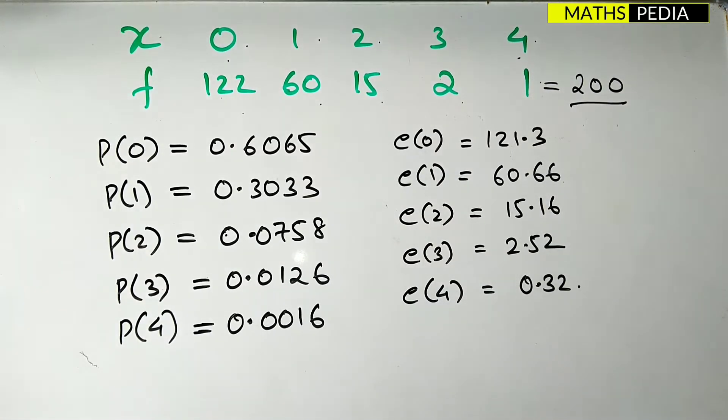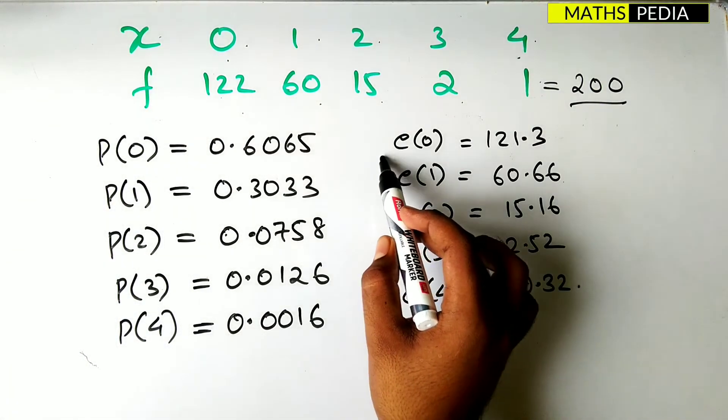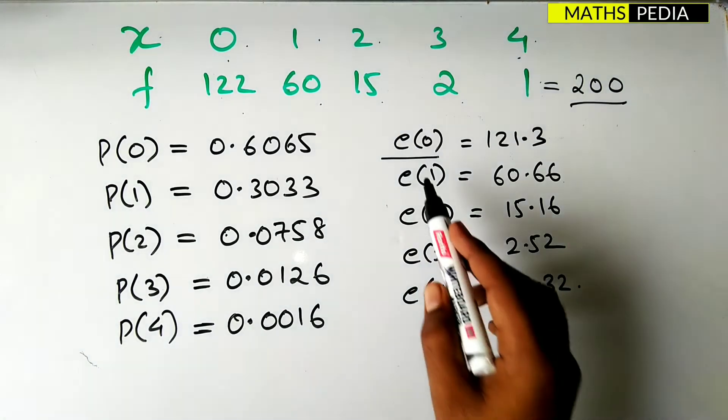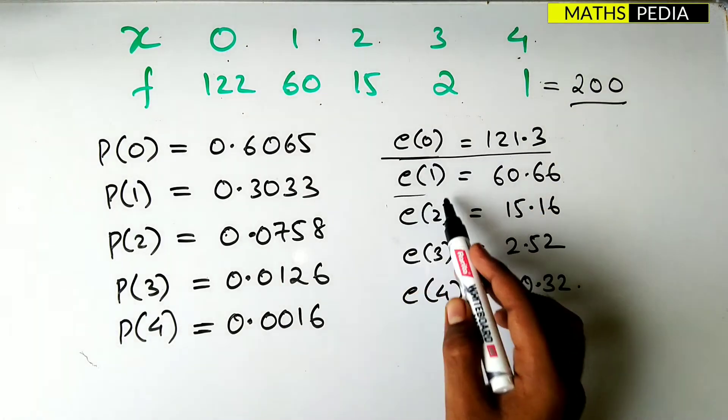So I have written all the values over here. That is p of 0 to till p of 4. And after that I have used the formula e of x is equal to summation of f into p of x. So I have found out the values of e of 0, e of 1, e of 2, e of 3 and e of 4.